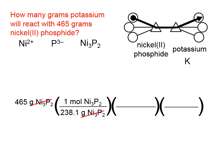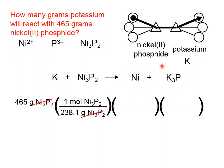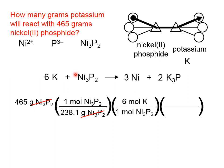Now we cross the middle bridge from moles of Ni₂-phosphide to moles of potassium, which requires coefficients from the balanced equation. Potassium reacts with Ni₂-phosphide in a single replacement reaction: potassium metal replaces the nickel. Nickel ends up by itself, and potassium and phosphorus combine in a 3-to-1 ratio. Balancing gives us a coefficient of 2 for K₃P, yielding 2 phosphorus atoms on each side, 6 potassiums, and 3 nickels.